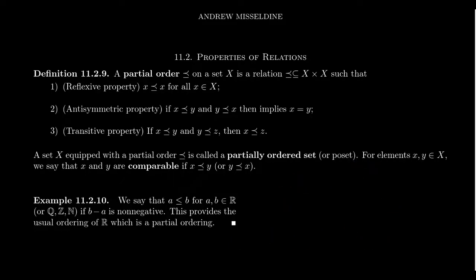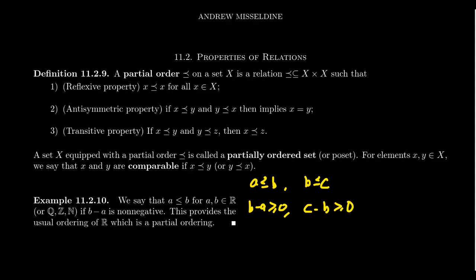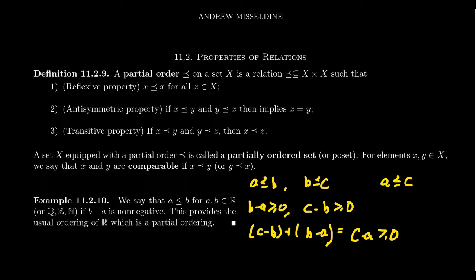For transitivity: take A ≤ B and B ≤ C. We want to argue A ≤ C. Notice B minus A is non-negative and C minus B is non-negative. When you add those together — C minus B plus B minus A — that simplifies to C minus A. A non-negative number plus a non-negative number is still non-negative, so C minus A is non-negative, which tells us A ≤ C. Therefore this is a transitive and hence a partial order.